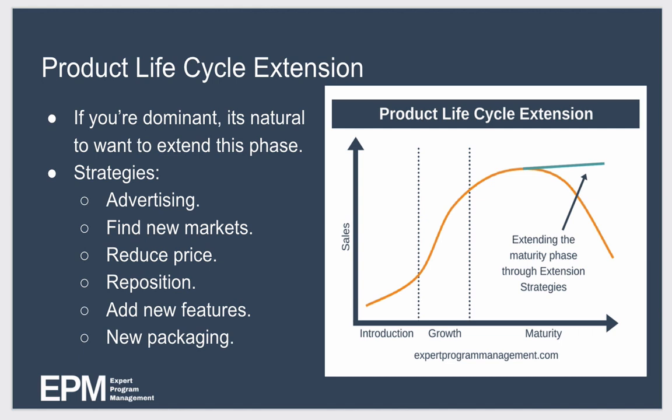So, how do we extend the product lifecycle? If you're a dominant player and your product is in the maturity phase, it's natural to want to extend this phase for as long as possible, because this is the phase where you make the most profit. In effect, what these companies are trying to do — as you can see in the diagram here — is make the maturity phase go on forever if they can. There are a number of strategies available to help companies try to do this.